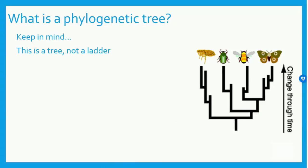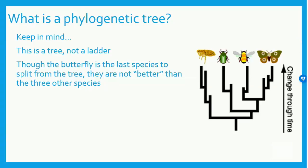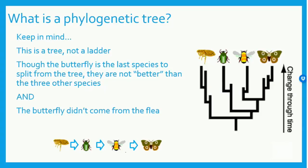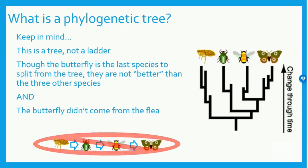There are a few things to keep in mind when reading a phylogenetic tree. The first big misconception to tackle is that this figure is a tree, not a ladder. In other words, the butterfly was the last species to split from the tree, but it doesn't mean butterflies are better than the three other species. It's also really important to recognize that the butterfly did not come from the flea. Instead, the flea and butterfly have evolved from a common, now extinct, ancestor.